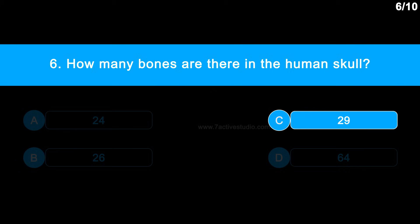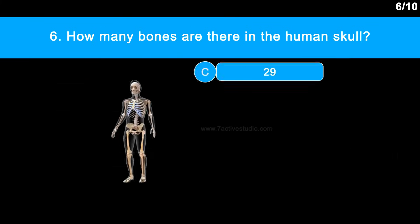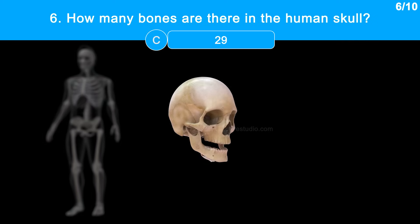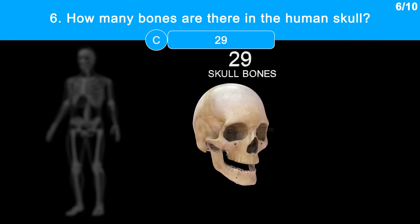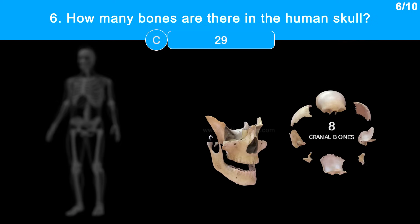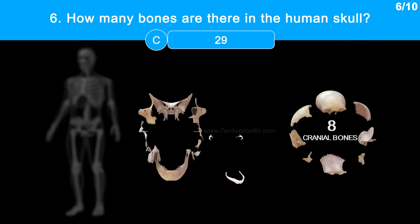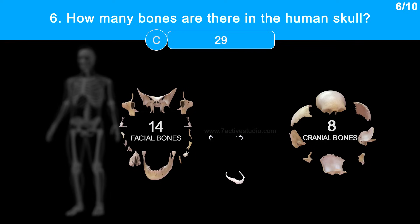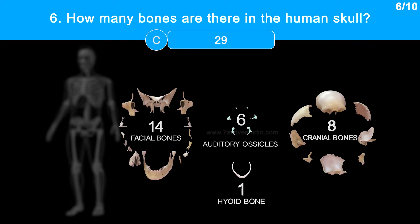The correct answer is option C, 29. There are a total of 29 bones in the skull: 8 cranial bones, 14 facial bones, 6 auditory ossicles, and 1 hyoid bone.